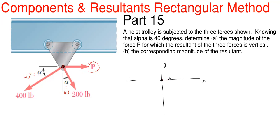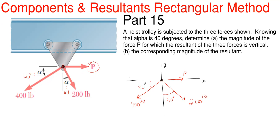Now I'll add all known and unknown forces. P is acting to the right — unknown at this point. Then we have 200 pounds going down and to the right, with alpha equal to 40 degrees. And we have 400 pounds going down and to the left, at 40 degrees off of the horizontal x-axis.